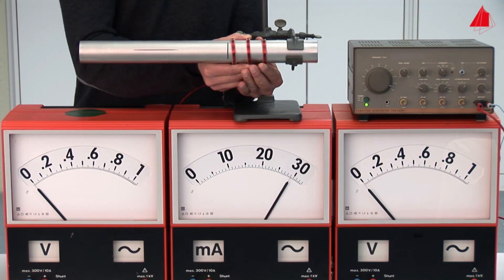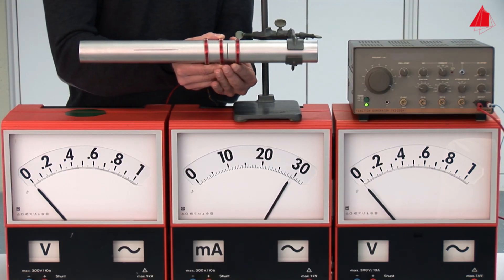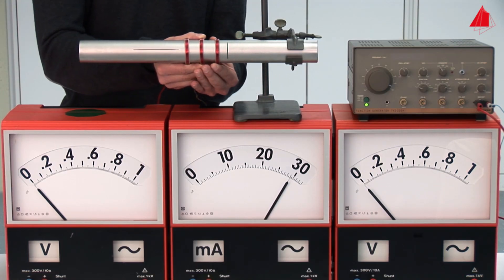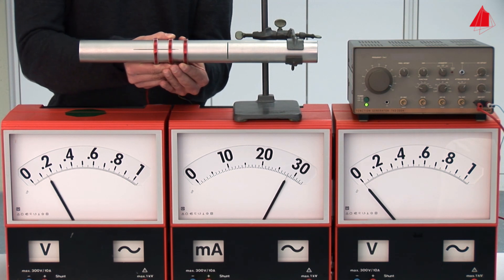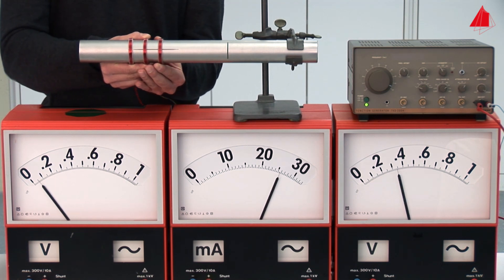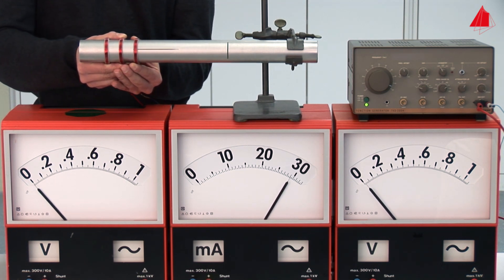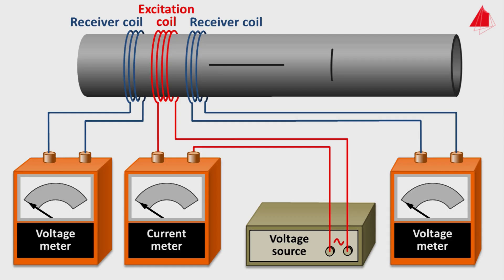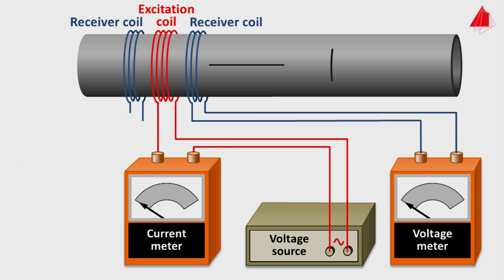Back in the laboratory we observe the same phenomena in reverse direction of movement — first the pointer of the left voltage meter deflects, then the pointer of the right voltage meter. The technique can be further improved by using only one voltage meter, connected to the right-hand terminals of the receiver coils, while the left terminals of the receiver coils are connected to each other. The voltage meter now indicates the difference of the voltages induced in the two receiver coils.